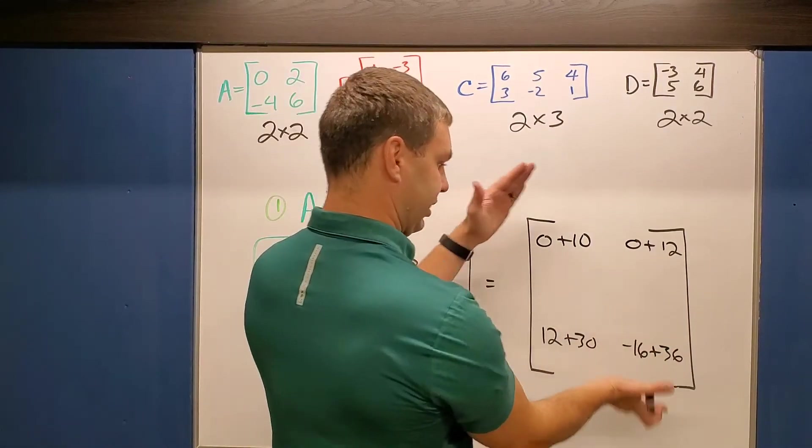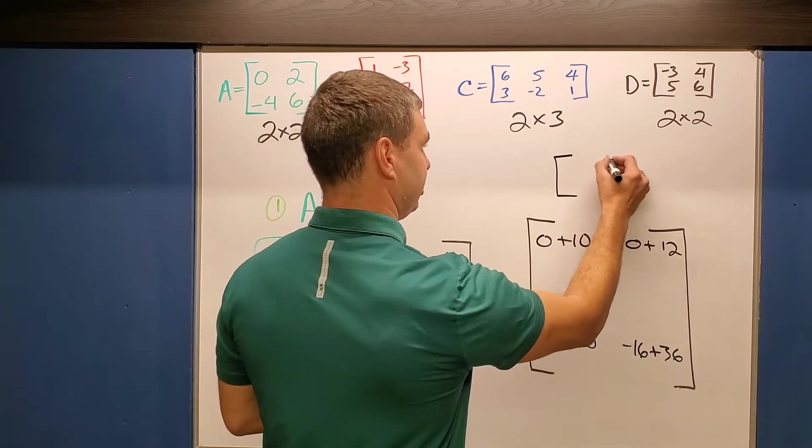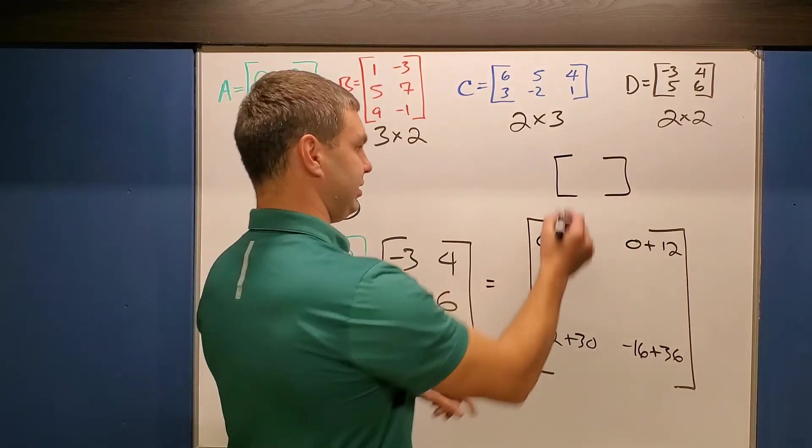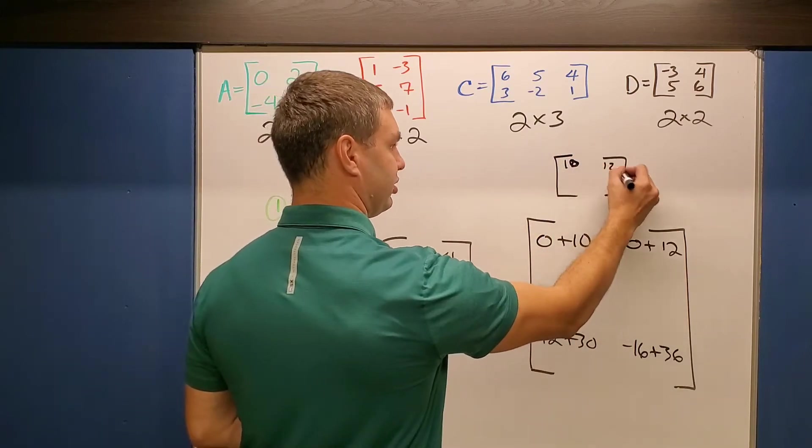So if I do this, if I simplify, I guess I made that way too big. I'll make the smaller version up here of my 2×2. 0 plus 10 is 10 for my first element. 0 plus 12, of course is 12.